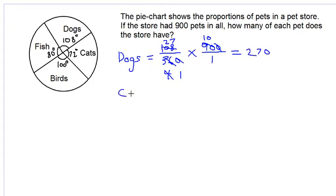Let's move on to cats. In the pie chart, 72 degrees is devoted to cats. To make this fraction, we take 72 over 360 and multiply by the total, which is 900 over 1.